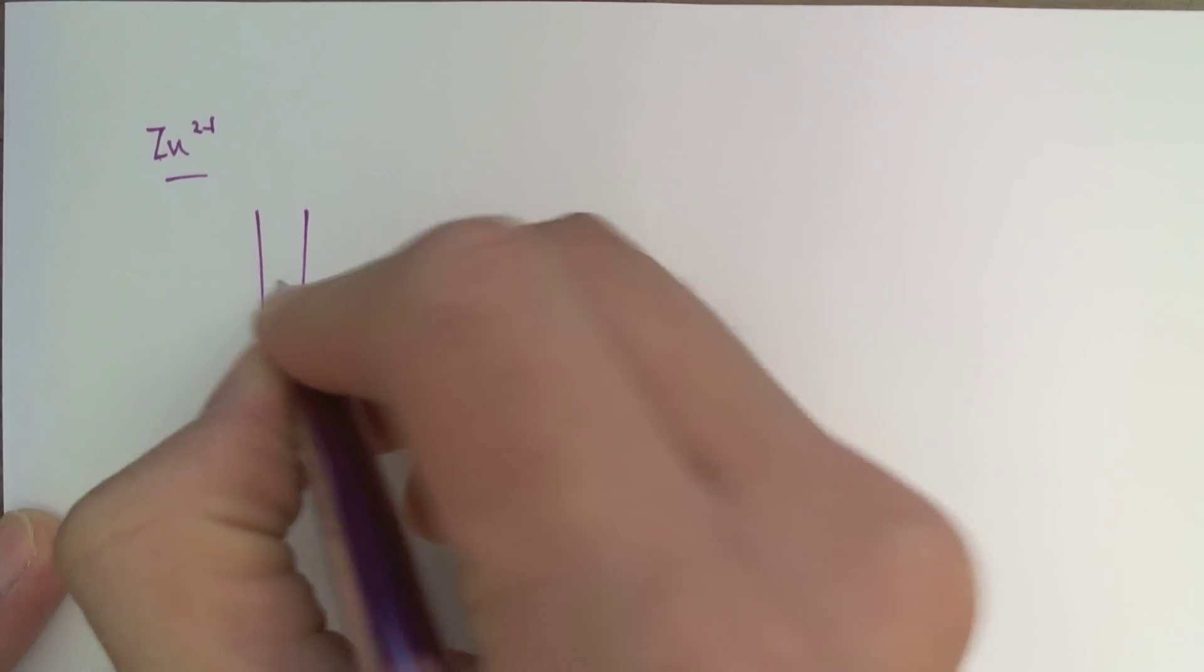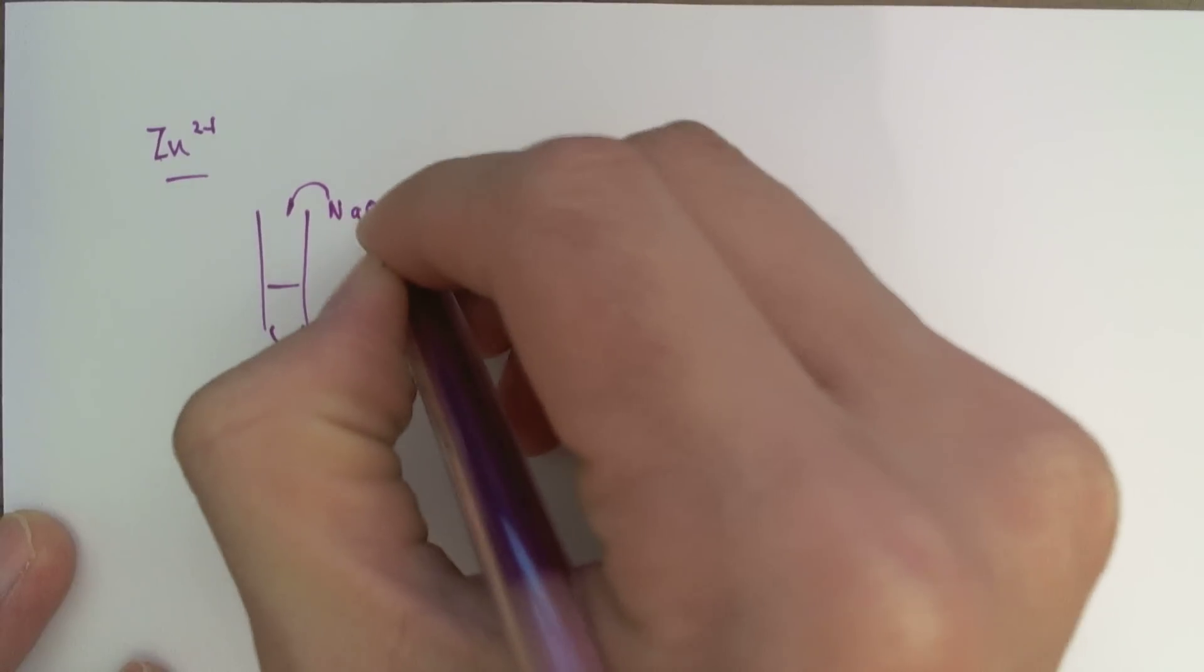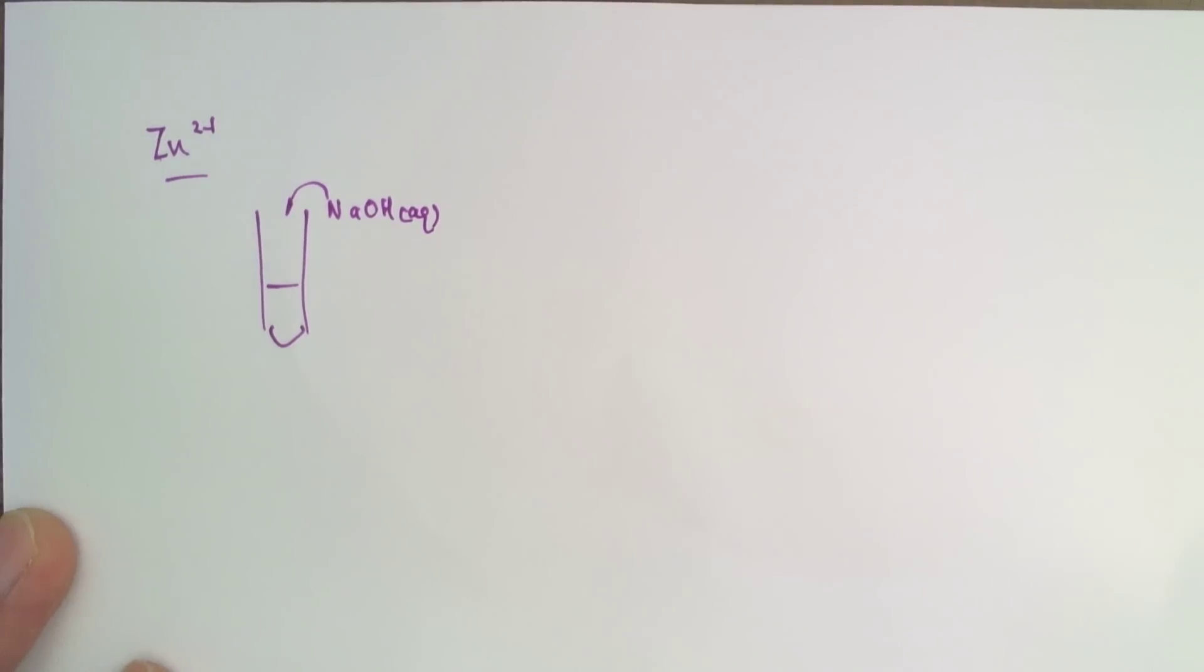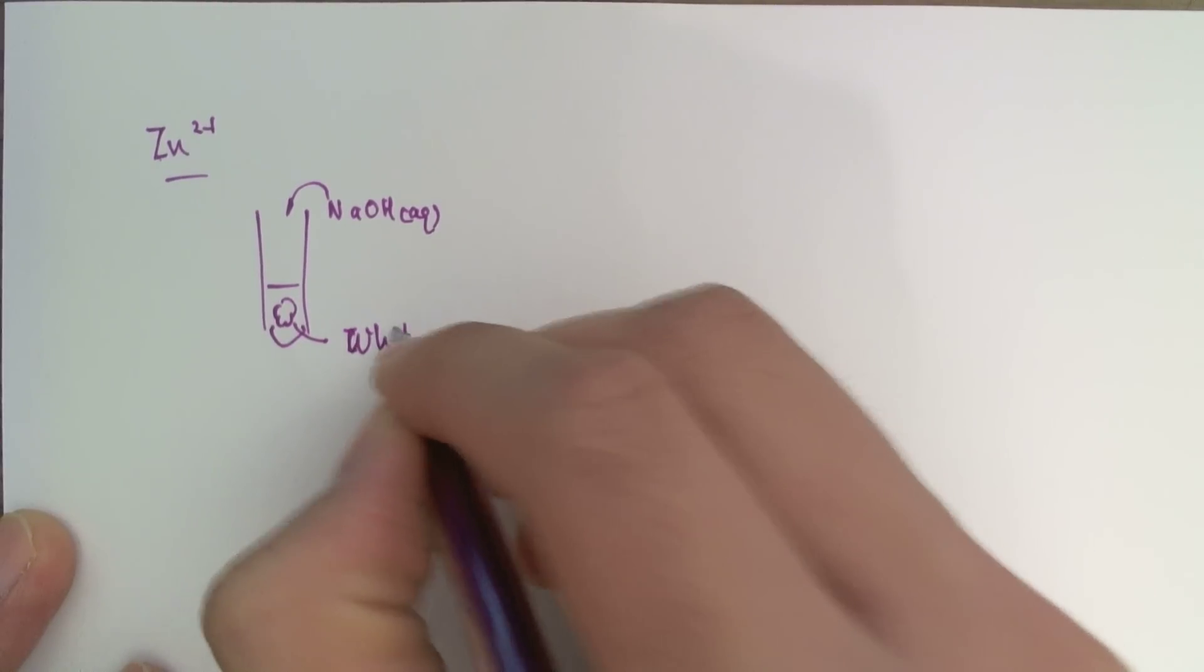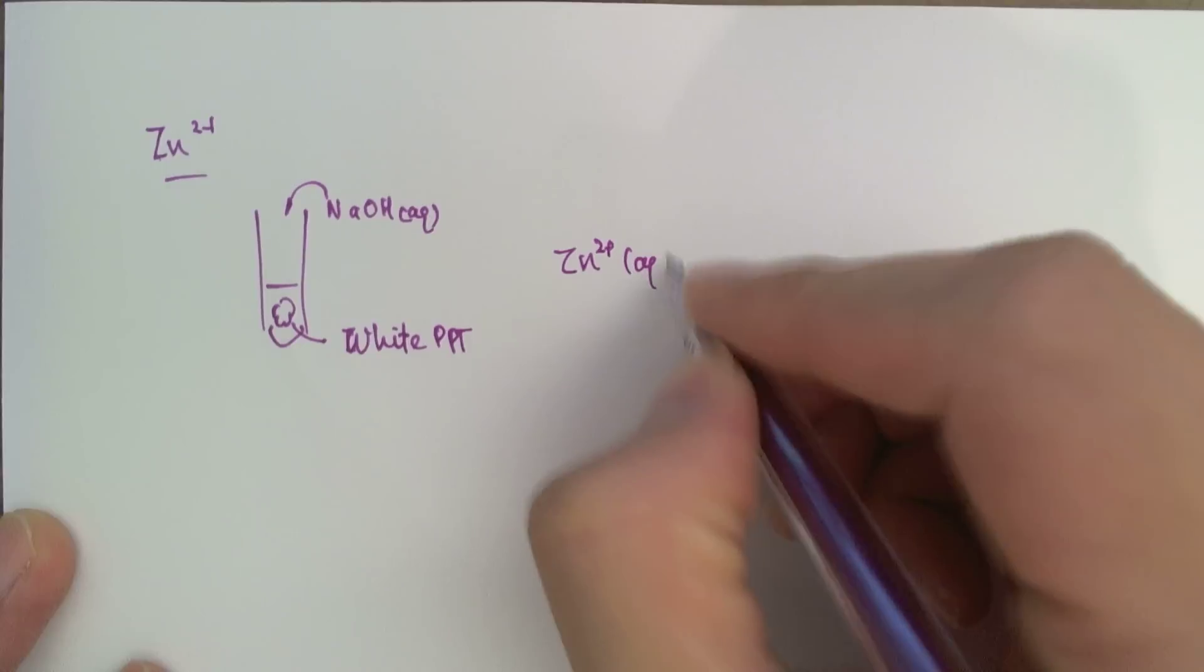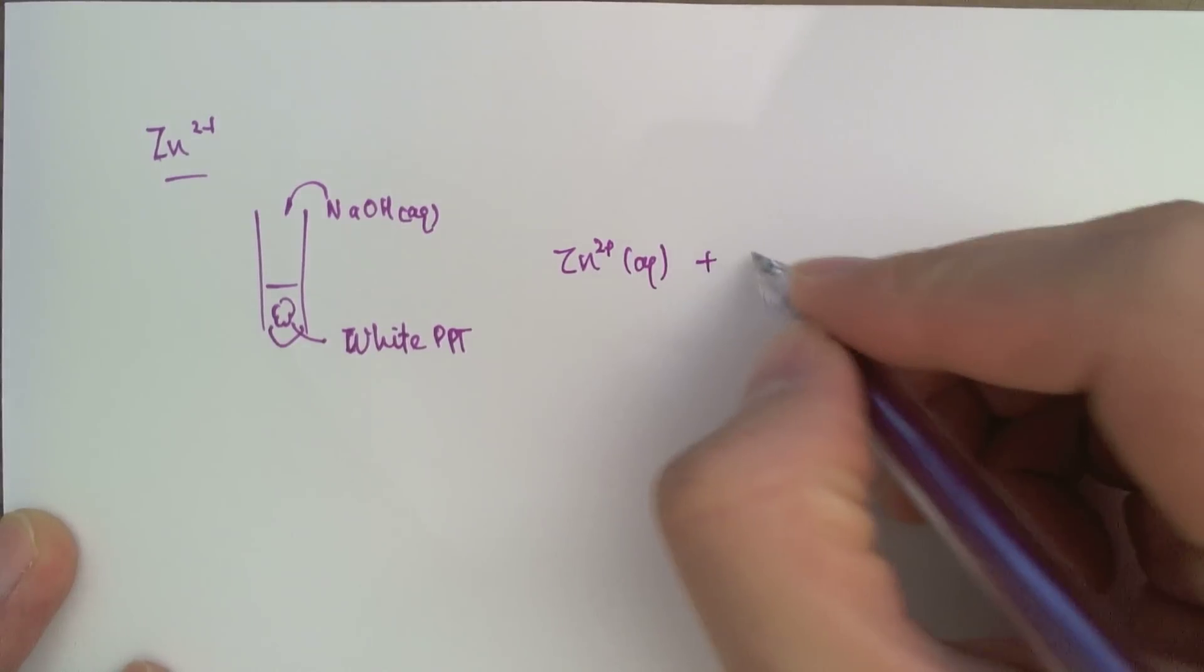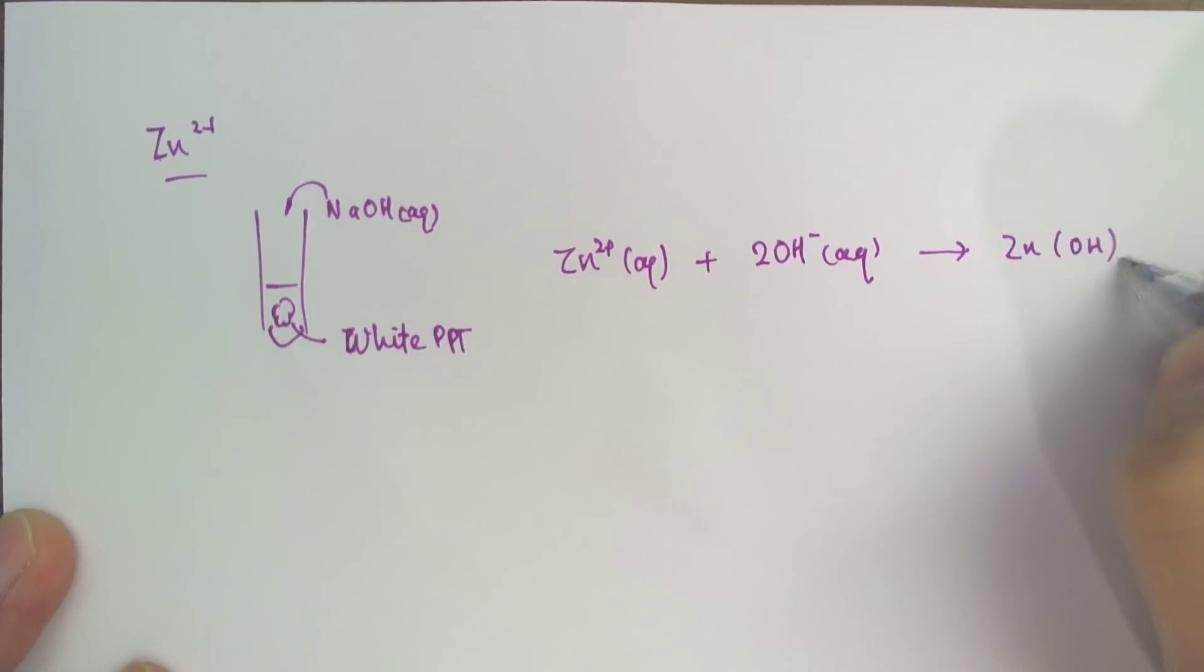Next up is zinc. So once again, the zinc, the suspected solution goes in the test tube, and we add aqueous sodium hydroxide. And that's going to result in a white precipitate, a gelatinous white precipitate. So what happened was that the zinc ions reacted with two aqueous hydroxide ions to form a solid zinc hydroxide complex. And this is white.